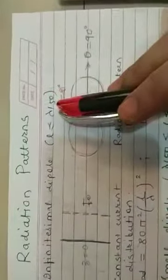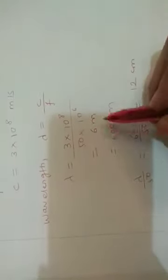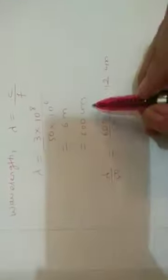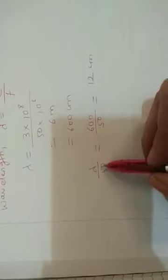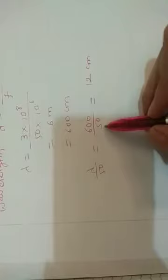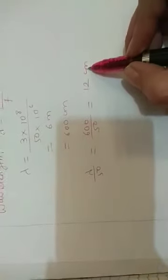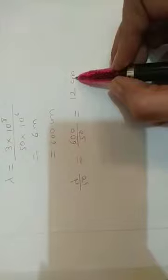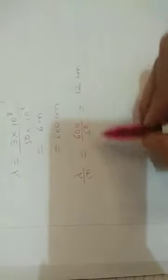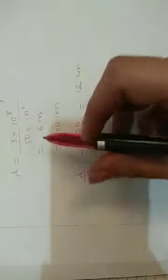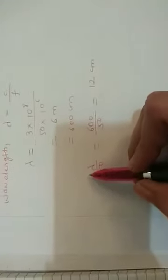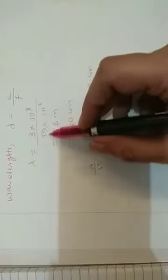When we say infinitesimal dipole, it means its length is less than or equal to lambda by 50. Suppose operating frequency is 50 megahertz — at 50 megahertz, wavelength lambda will be equal to C by F, which comes out to be 6 meters or 600 centimeters. So lambda by 50 will be 600 divided by 50, which is equal to 12 centimeters. If we operate any dipole of length 12 centimeters or less at 50 megahertz, it will work as an infinitesimal dipole.